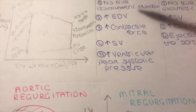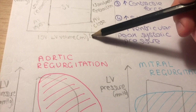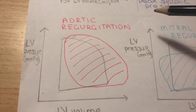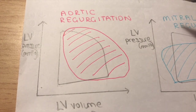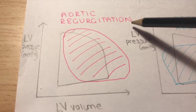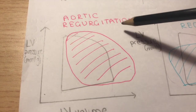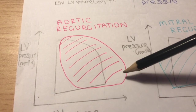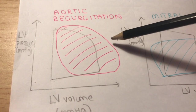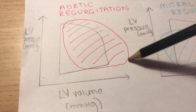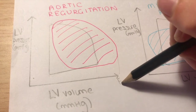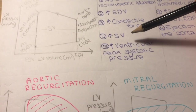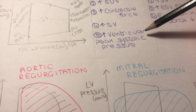The second point is an increased end diastolic volume. In aortic regurgitation, the end diastolic volume is increased because normally blood only enters the ventricle from the atrium, but in aortic regurgitation there is also blood coming from the aorta into the ventricle. So you have two sources of blood, resulting in an increased end diastolic volume. This also leads to an increased contractile force, an increased stroke volume, and an increased ventricular peak systolic pressure.